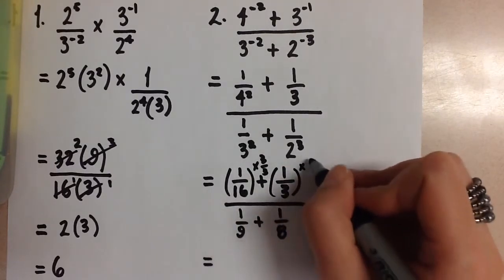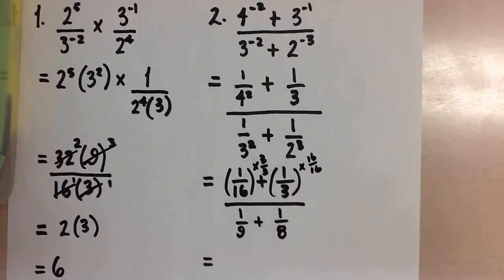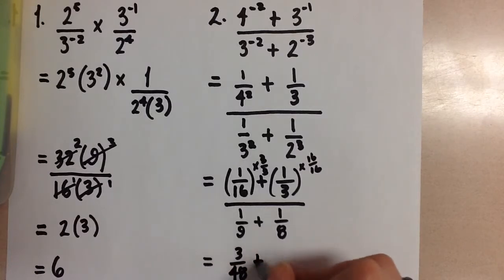That just goes back to our basic adding fractions rules that we learned in grade school. So this is going to give us 3 over 48 plus 16 over 48. And this is over. Now we need a common denominator for the bottom portion.